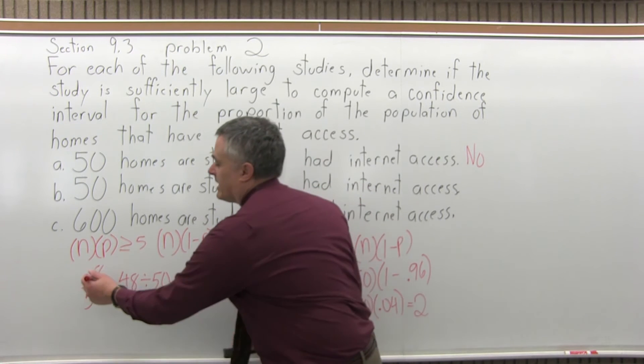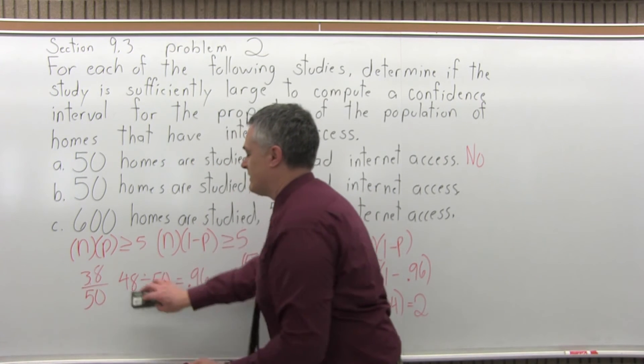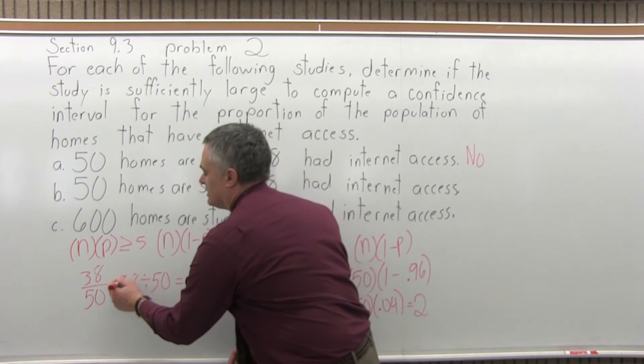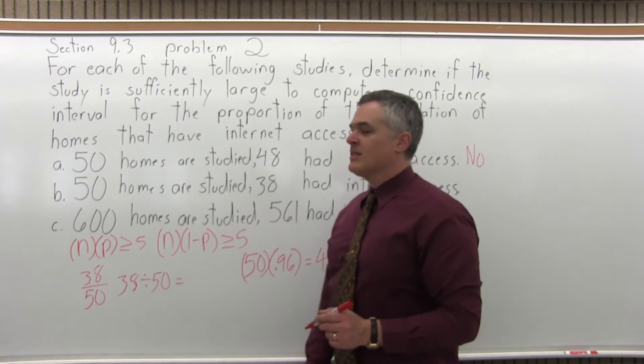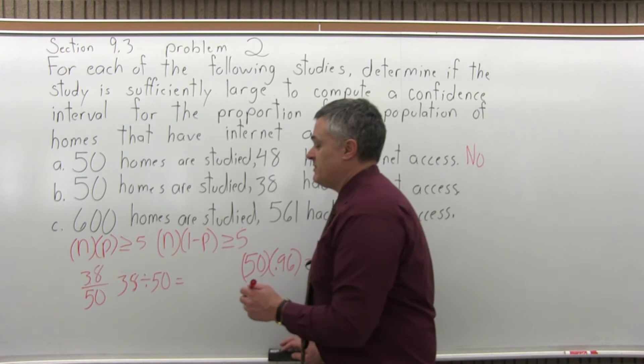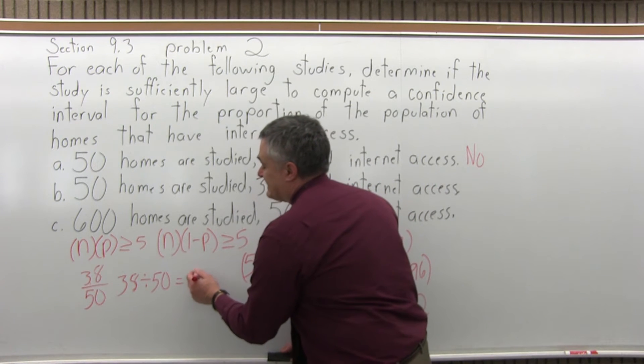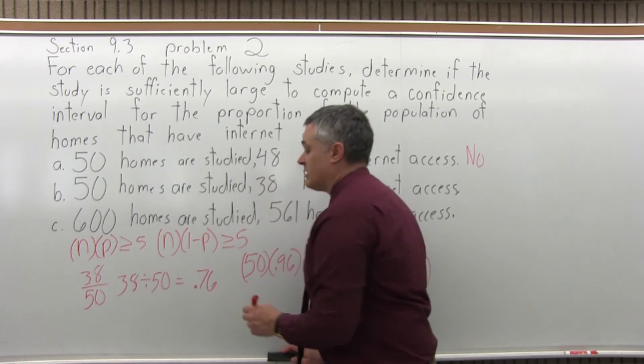Before it was 48 divided by 50. For part b, it's 38. So, our estimate for p is .76 when you divide 38 divided by 50. You can do that on your calculator.